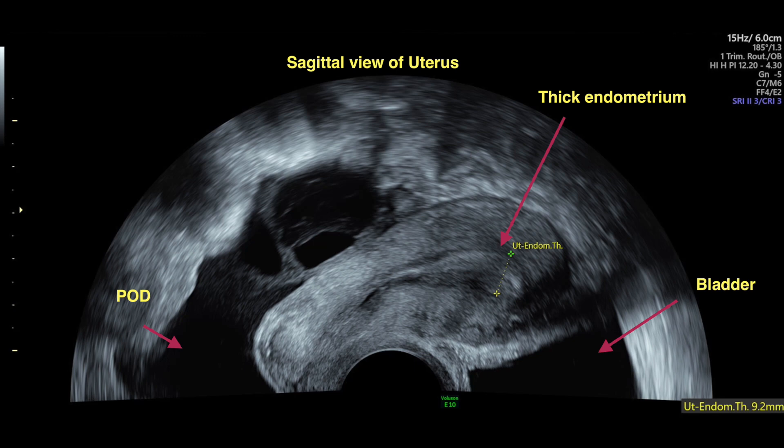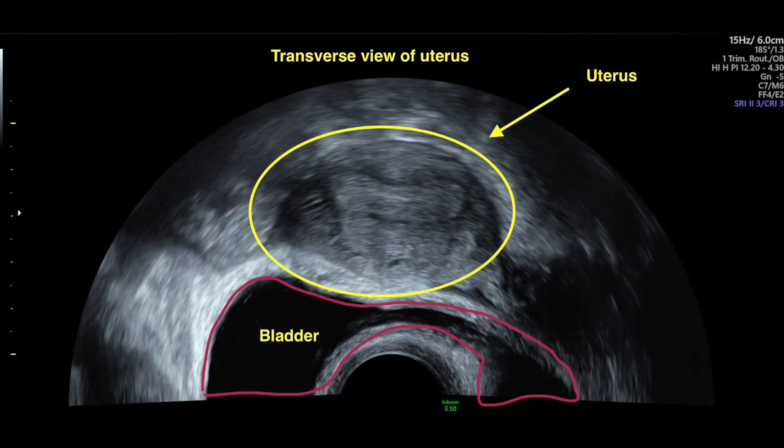This is another picture of an ultrasound performed for an ectopic pregnancy, which shows a thick endometrium in the center and a lot of fluid behind the uterus. This is the transverse view showing the uterus with a thick endometrium and a bladder next to it.